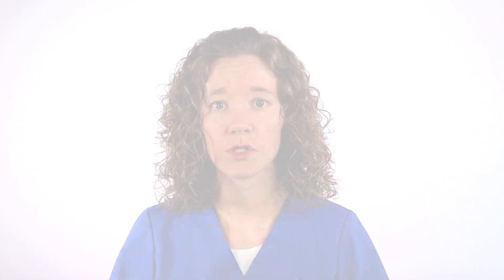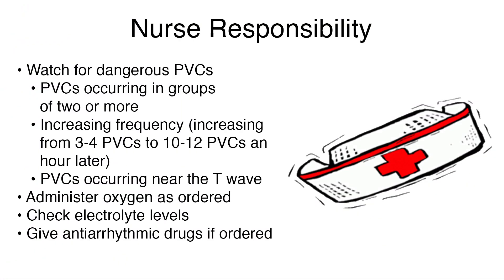It is the nurse's responsibility to watch for dangerous PVCs, which include PVCs occurring in groups of two or more, increasing frequency such as increasing from three to four PVCs to ten to twelve PVCs an hour later, or PVCs occurring near the T wave. The nurse will administer oxygen as ordered, check electrolyte levels, and give antiarrhythmic drugs if ordered.